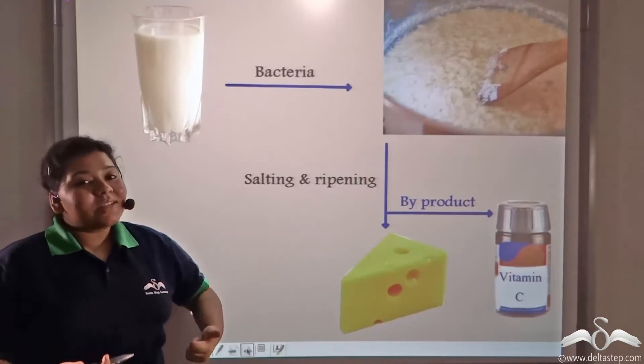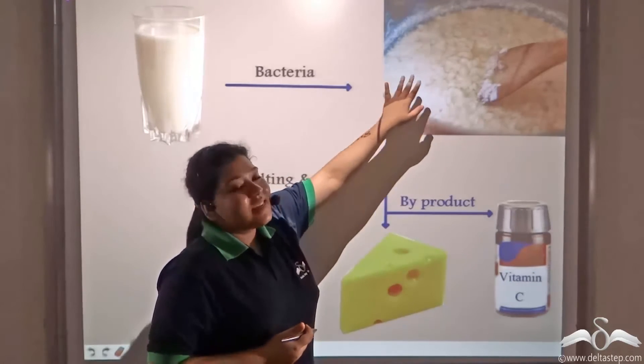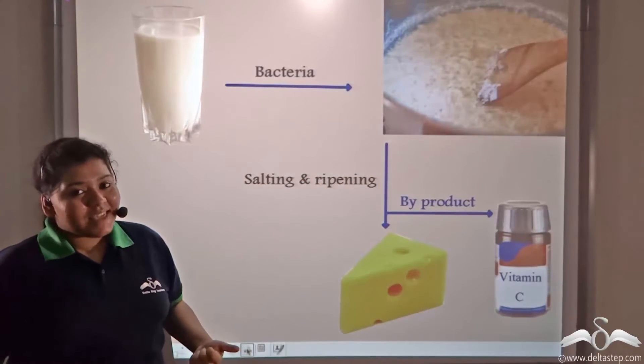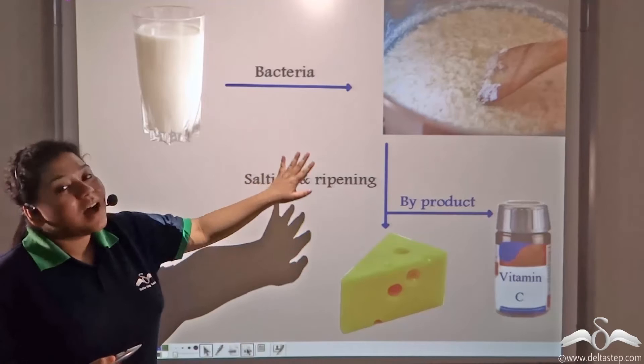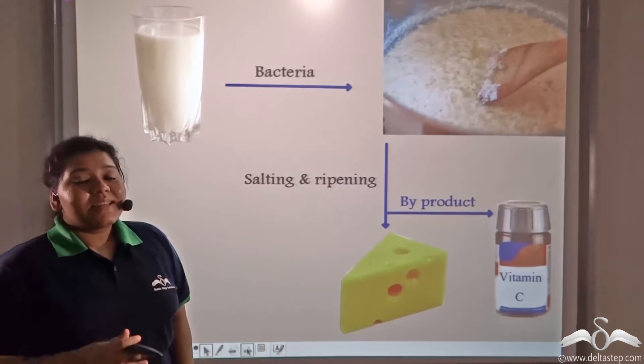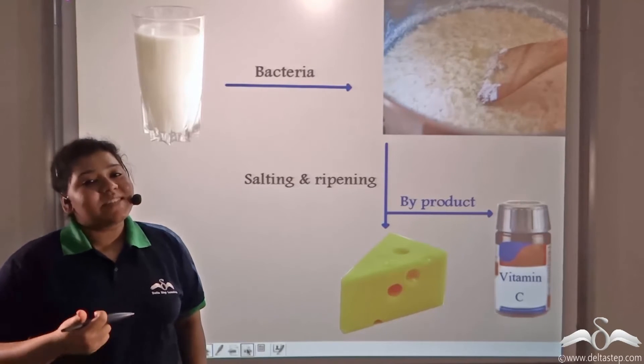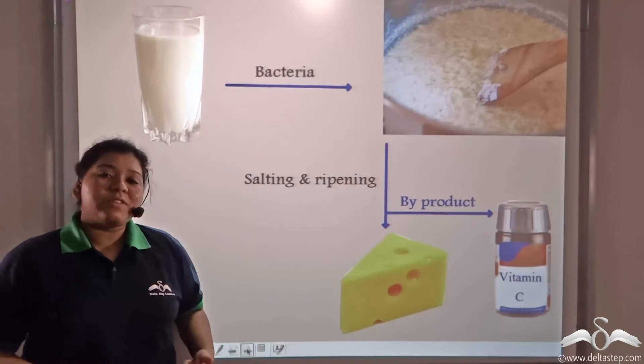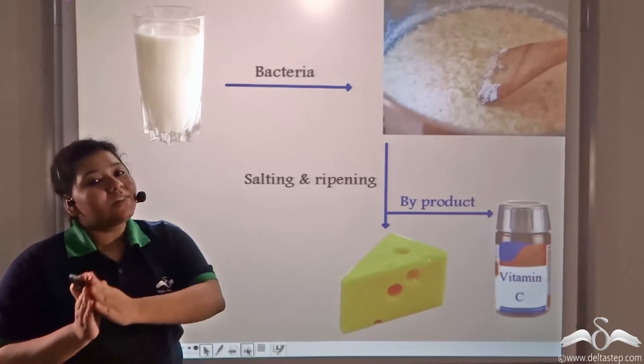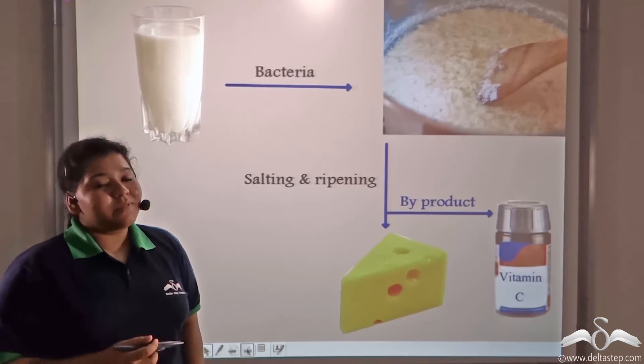When salting is done, the bacteria present inside the yogurt loses water from its cell because of the high concentration of salt in the yogurt. This happens by the process of osmosis, which is the process of transportation of water from a high water concentration to a low water concentration across a semi-permeable membrane.